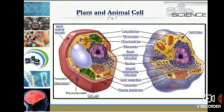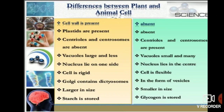One most important thing: in plant cells, plastids are present, which are responsible for photosynthesis. But in animal cells, plastids are absent. So let us start the differences between plant and animal cell.